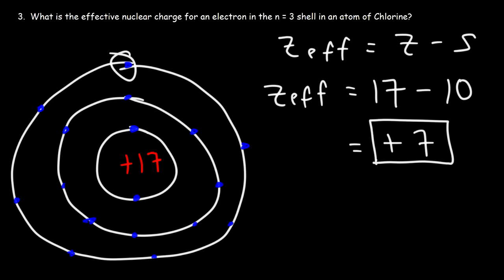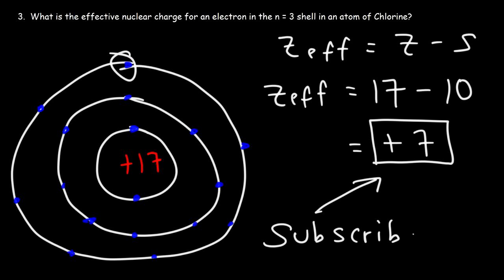Notice that this is equal to the number of valence electrons in chlorine. When dealing with representative elements in groups 1, 2, or 3 through 8, the effective nuclear charge of a valence electron is the same as the group number. And that's it for this video — feel free to subscribe to this channel and click on the notification bell. Thanks for watching.